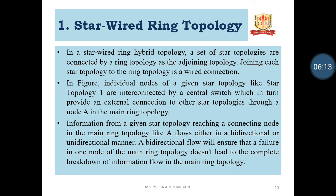Star Wired Ring Topology: In a star wired ring hybrid topology, a set of star topologies are connected by a ring topology as the adjoining technology, joining each star topology to the ring topology via a wired connection. Individual nodes of a given star topology, like star topology 1, are interconnected by a central switch, which in turn provides the external connection to other star topologies through a node A in the main ring topology. Information from a given star topology reaching a connecting node in the main ring topology, like A, flows either in a bidirectional or unidirectional manner. A bidirectional flow ensures that a failure in one node of the main ring topology does not lead to a complete breakdown of information flow.